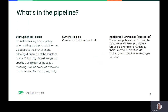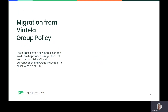Symlink policies create a symlink on the host. There are additional new policies in 4.15 which mimic the behavior of Ventilla's proprietary group policy implementation, so there is some duplication with sudoers entries and message of the day and issue message policies. The purpose of the new policies added in 4.15 is to provide a migration path from the proprietary Ventilla authentication and group policy tool to either WinBind or SSSD. This migration path isn't feature complete, but a significant amount of work is done and more is planned.